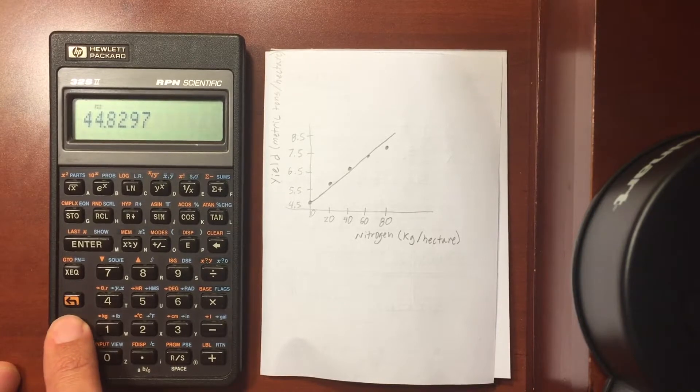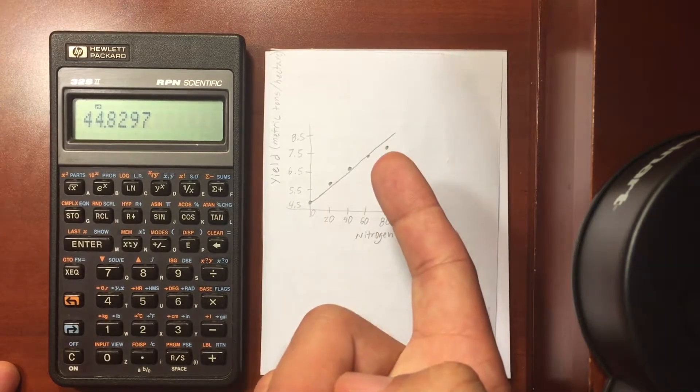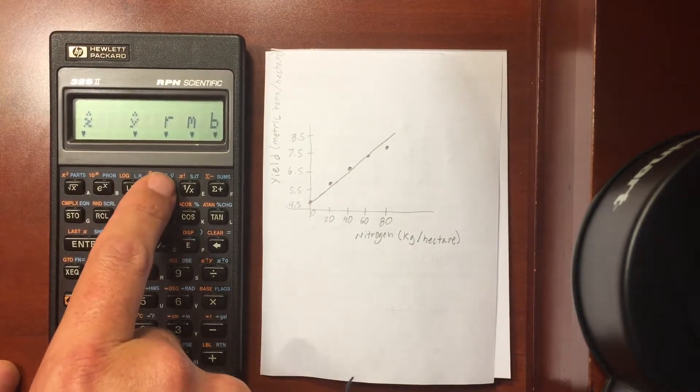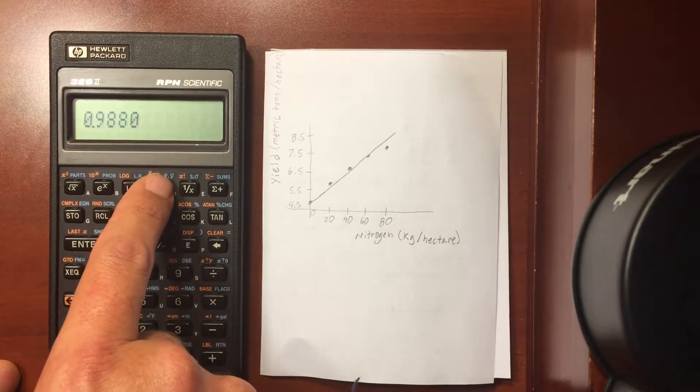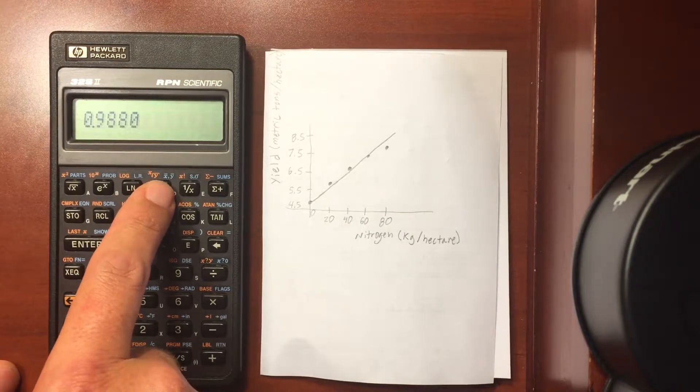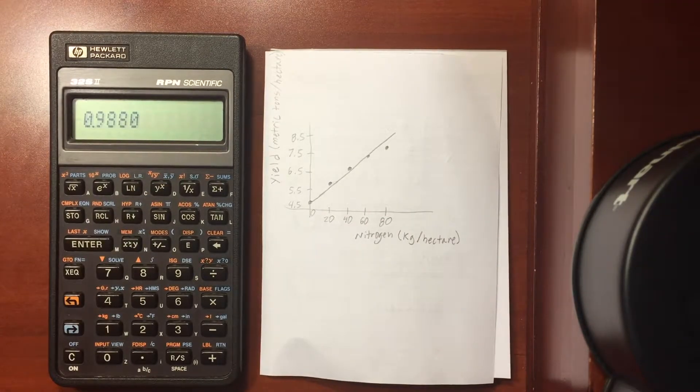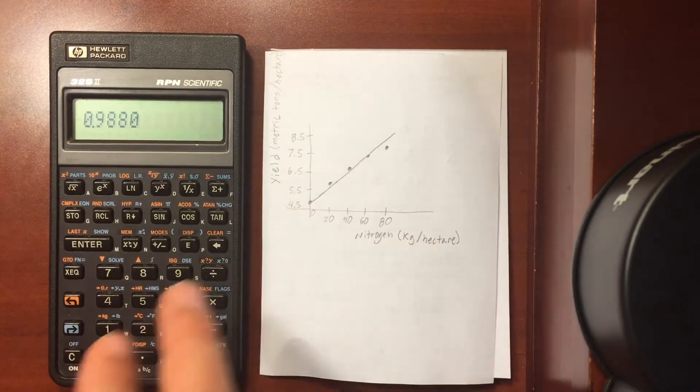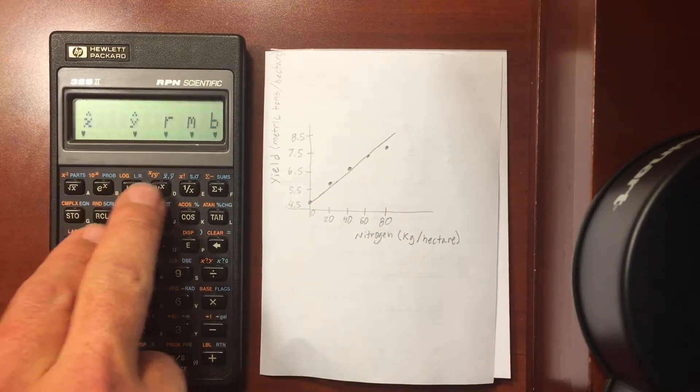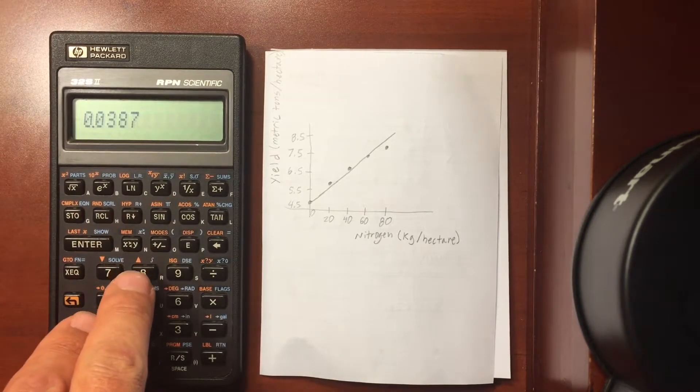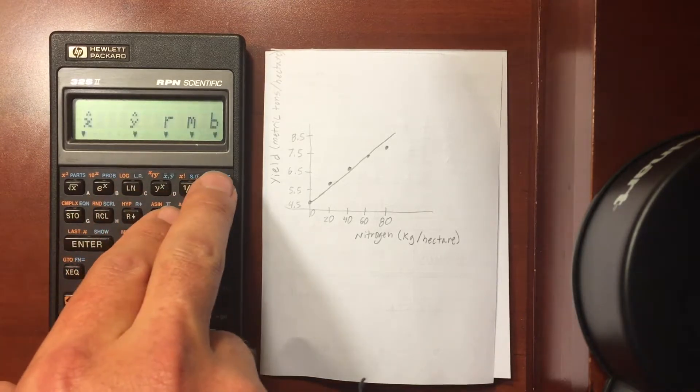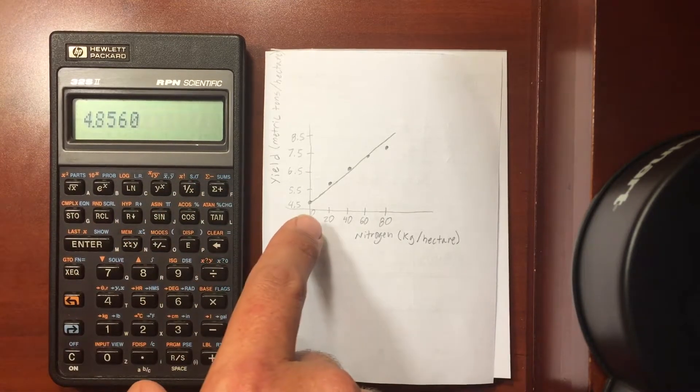Now for linear regression. So this essentially plots that line that we see here. It gives you the parameters for that. So we have our r value. That is how close the line fits to those numbers there. You have your m, which is your slope. So that's the slope of this line. And you have your b, which is your y intercept. So this intercepts at 4.85.